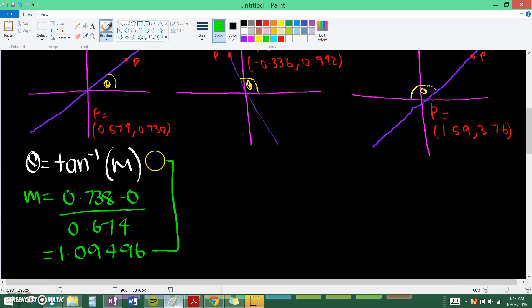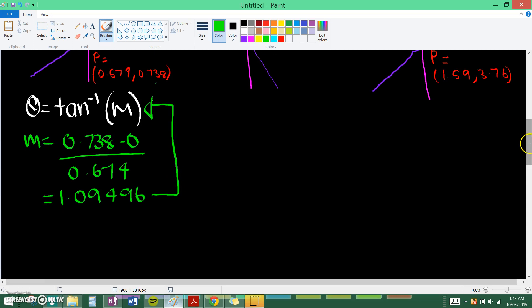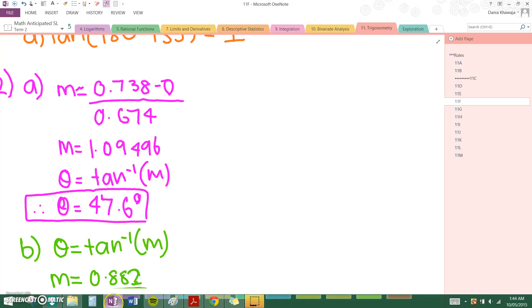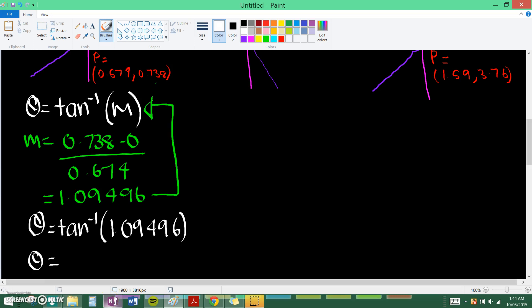So you go and just substitute that in here. So I'll scroll down. So theta equals tan negative 1, 1.09496. And from that we know that theta equals 47.6 degrees.